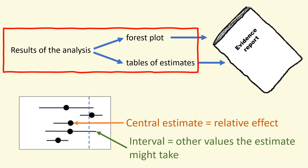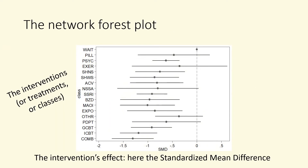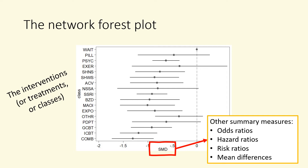We are interested in how effective the different interventions are using an appropriate summary measure. Network forest plots compare interventions to a reference intervention, whilst tables can contain more information, comparing all interventions to each other. Both will present a central estimate of the difference between the interventions and a confidence interval. This is a forest plot for a network meta-analysis of interventions to treat social anxiety. The interventions are shown up the side of the plot, and the relative effects of each intervention are plotted in units of standardized mean difference shown along the horizontal axis. Depending on the outcome type, our summary measure could be the odds ratio, the hazard ratio, risk ratio, or mean difference, or, as in the social anxiety example, the standardized mean difference.